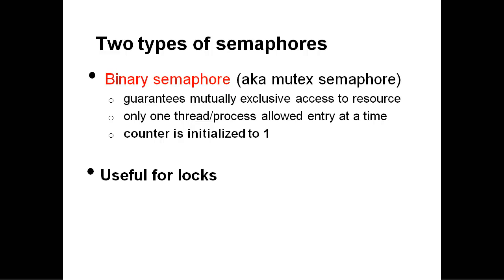The first type of semaphore we'll talk about is a binary semaphore, also known as a mutex semaphore. The goal for this kind of semaphore is to provide mutually exclusive access to a resource — it's really just a way of implementing a lock, meaning only one thread or process is allowed entry to the semaphore at a time. A binary semaphore is a limited form of a semaphore where the counter value is initialized to 1 and never allowed to go above 1, making it act exactly like a lock.